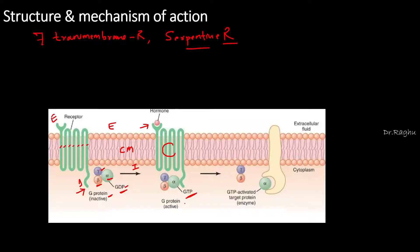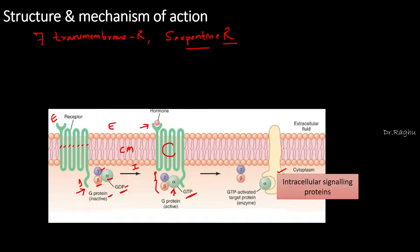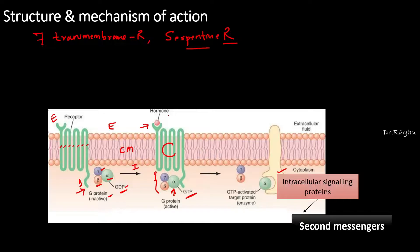Once the GDP gets converted into GTP, the alpha subunit of this G-protein is going to dissociate from the beta and the gamma subunit. Now this dissociated alpha subunit is going to activate some other proteins — these proteins are nothing but intracellular signaling proteins. So once these proteins are activated, there is going to be production of some chemicals inside the cells, and these chemicals are called as the second messengers via which the effect is going to happen. The ligand which is coming and binding to the receptor is usually referred to as the first messenger.